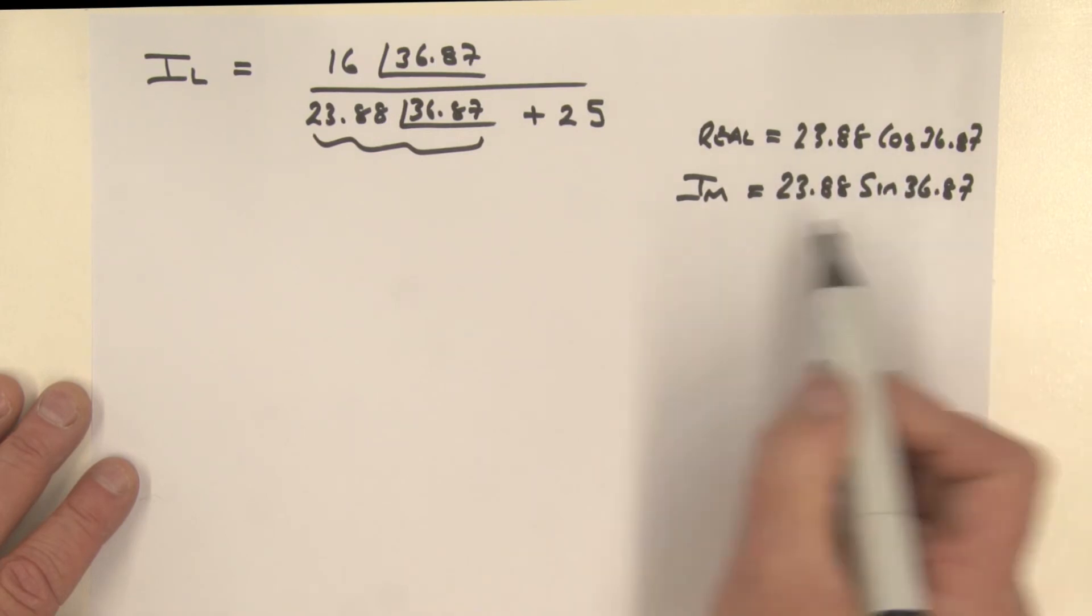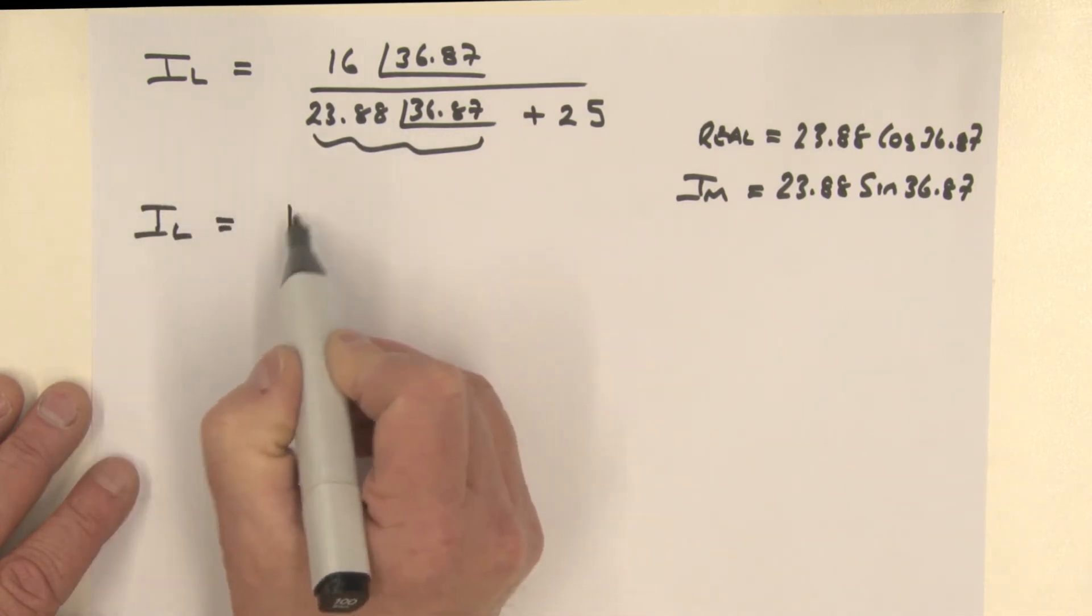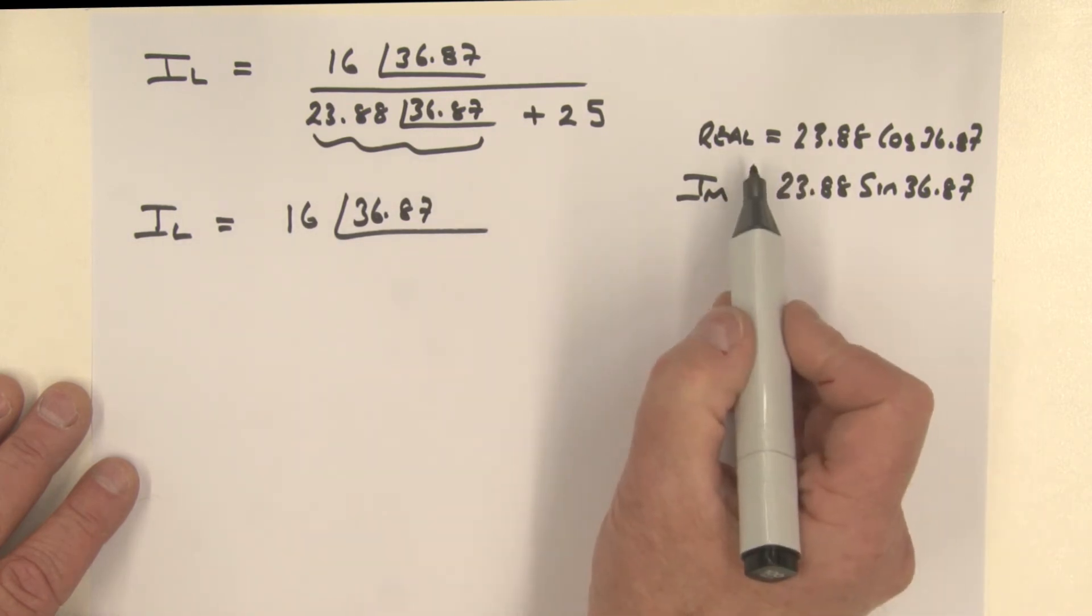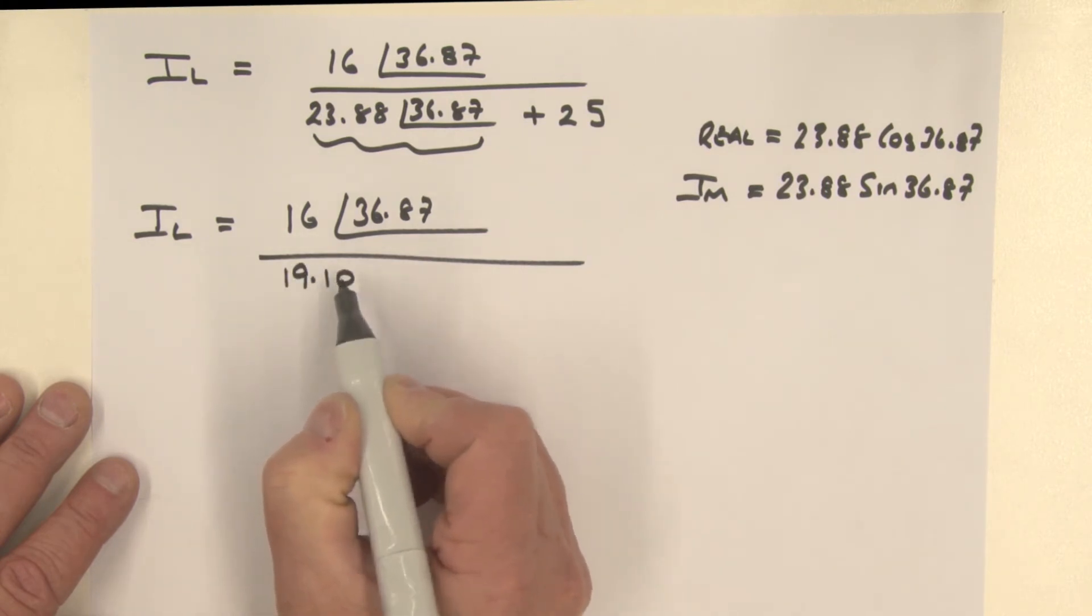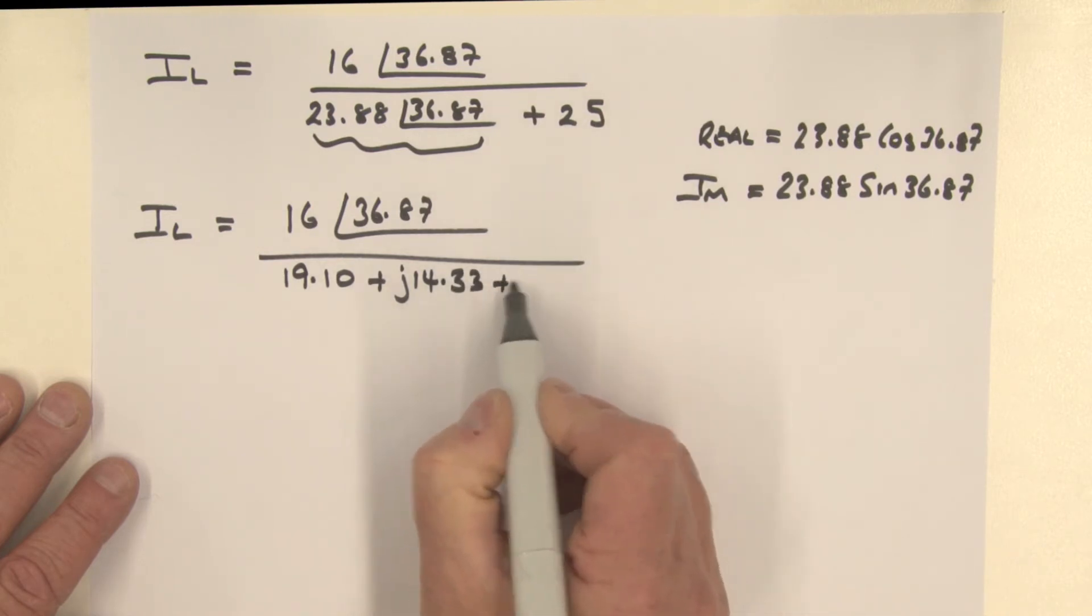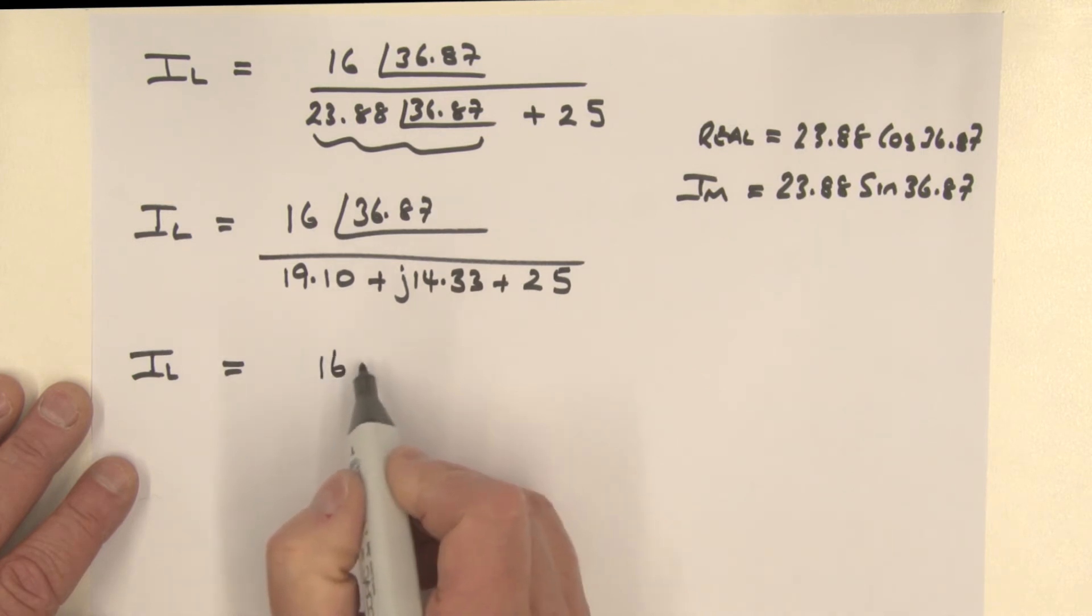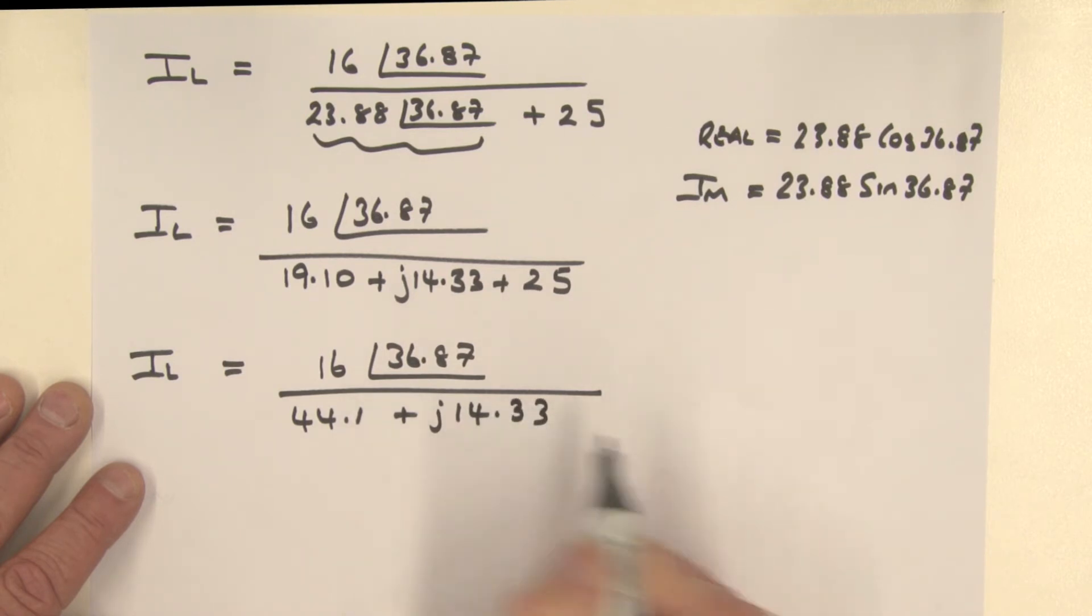So we evaluate those two parts there, we'll have the real and imaginary component of that impedance. So IL is equal to 16 angle 36.87. Evaluating this, we have the real bit being 19.10 plus the imaginary bit J14.33, and then still plus that 25. We're going to add the two real bits together. So therefore, this load current IL is 16 at angle 36.87, divided by 44.1 plus J14.33.